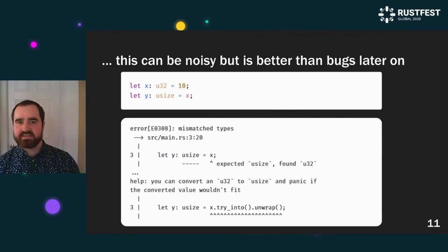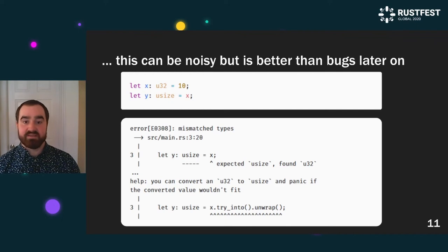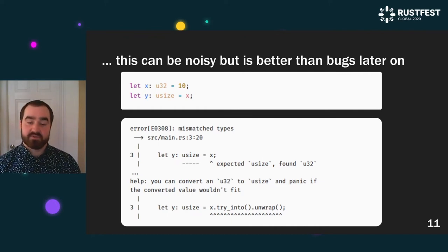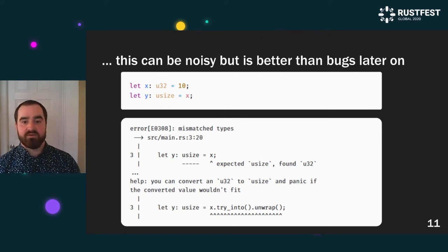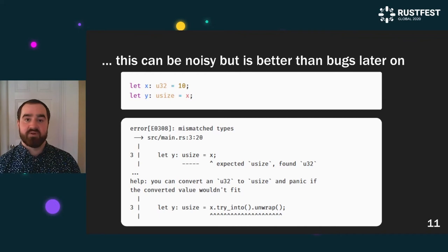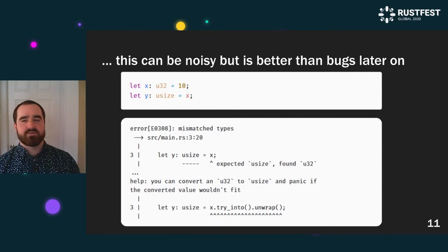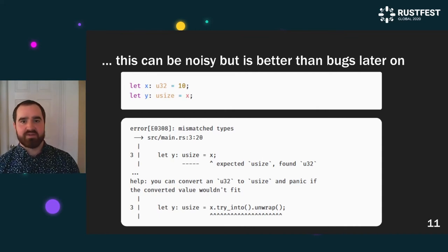This can be a little bit noisy sometimes. Here we're trying to convert between a 32-bit unsigned integer and the platform's native integer size, and Rust is not happy because it wants us to do an explicit conversion — where we try to convert the number, but stop execution if it wouldn't fit. This is a little noisy up front, but it also catches real bugs, especially if we're running on something like a 16-bit platform where this would certainly be a bug. Having these things caught up front is really important: the more things you catch at compile time, the less you have to worry about at runtime.